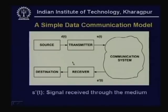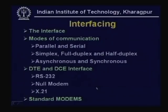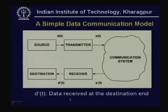The source and destination are known as DTE (Data Terminal Equipment) and the transmitter and receiver are known as DCE (Data Communication Equipment). This interface is known as RS-232C, and in this context there is a concept known as null modem that we shall discuss, along with X.25 and various types of modems or DCE that are being used, so that you can interface to the communication system.